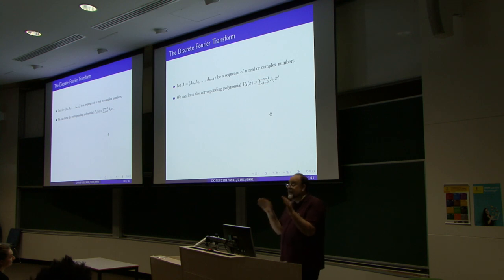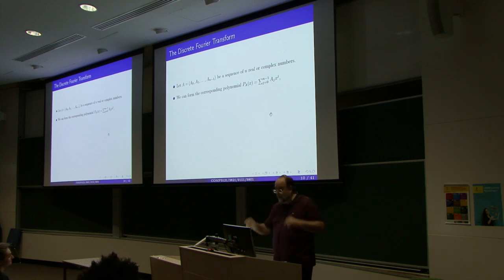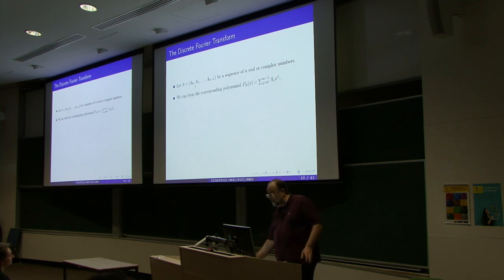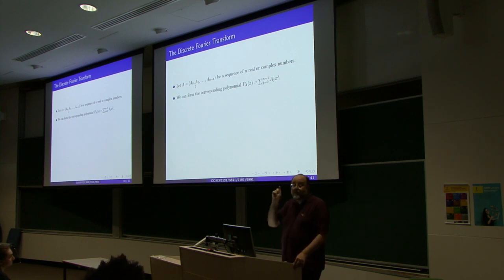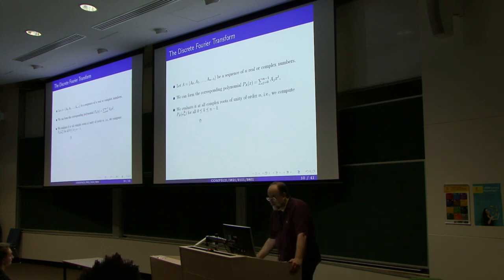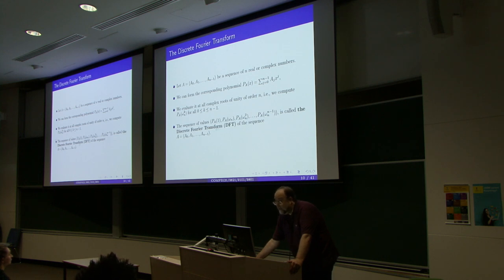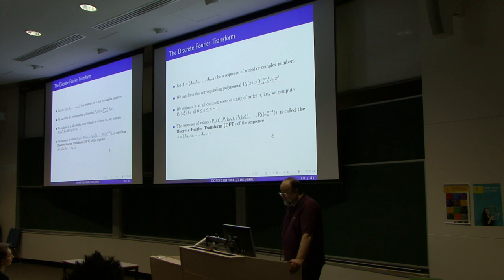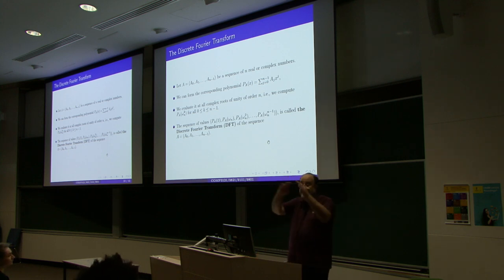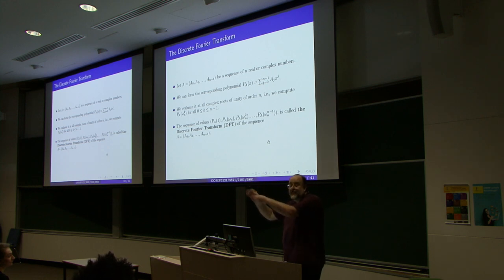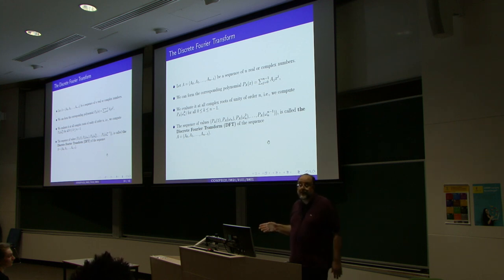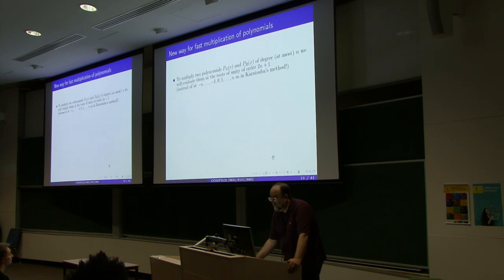The discrete Fourier transform is nothing but the sequence of values of the polynomial—constructed from your sequence as coefficients—evaluated at all the roots of unity of order equal to the length of the sequence. So this sequence of values, ωₙ⁰, ωₙ¹, ωₙ², up to ωₙⁿ⁻¹, is called the discrete Fourier transform of the original sequence A. Nothing to remember: form a polynomial, evaluate it at all roots of unity of the order equal to the length of the sequence.